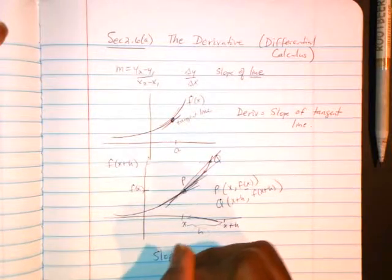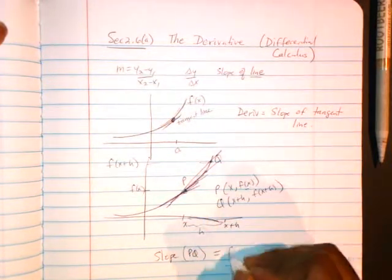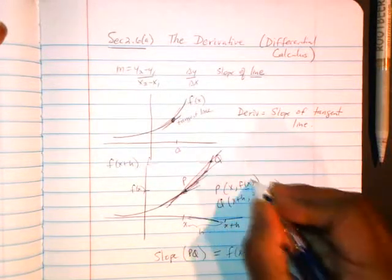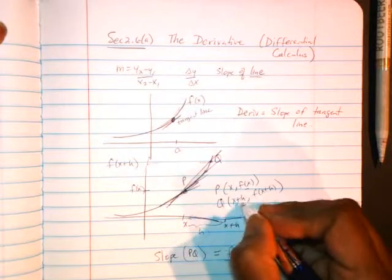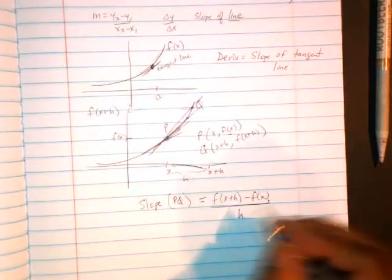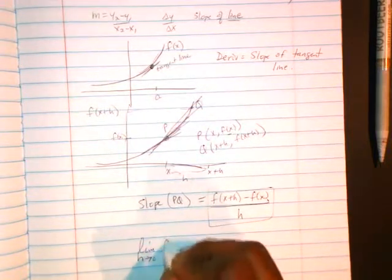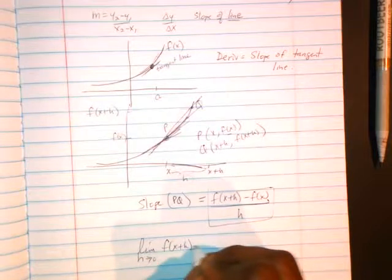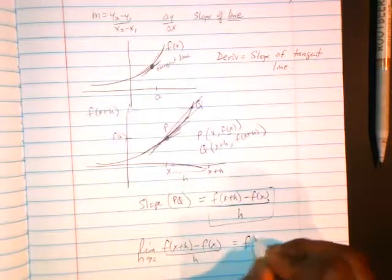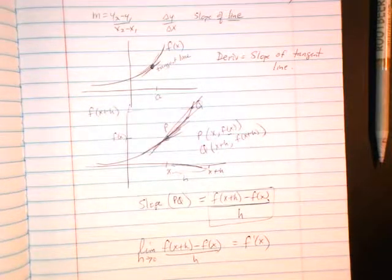Okay, so the pairs p had an ordered pair x comma f of x, which is y. And q's points coordinates were x plus h and f of x plus h. And so the slope of pq is change in y. Okay, this minus this divided by change in x. When you subtract this, the x's cancel out and you just get h. And it is this that as h goes to 0, that's your difference quotient, it becomes the slope of the tangent line. And we call it f prime of x, the derivative.